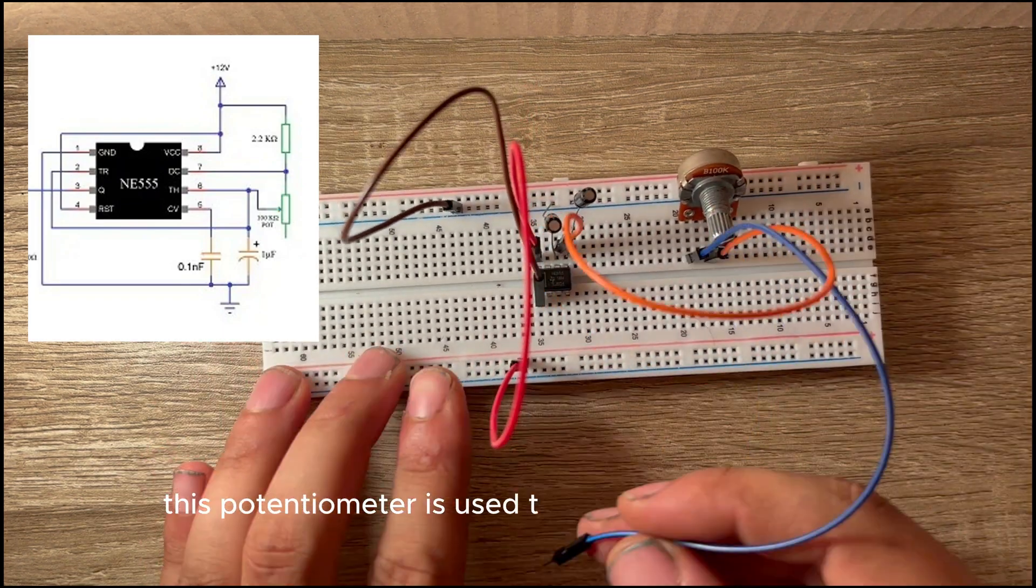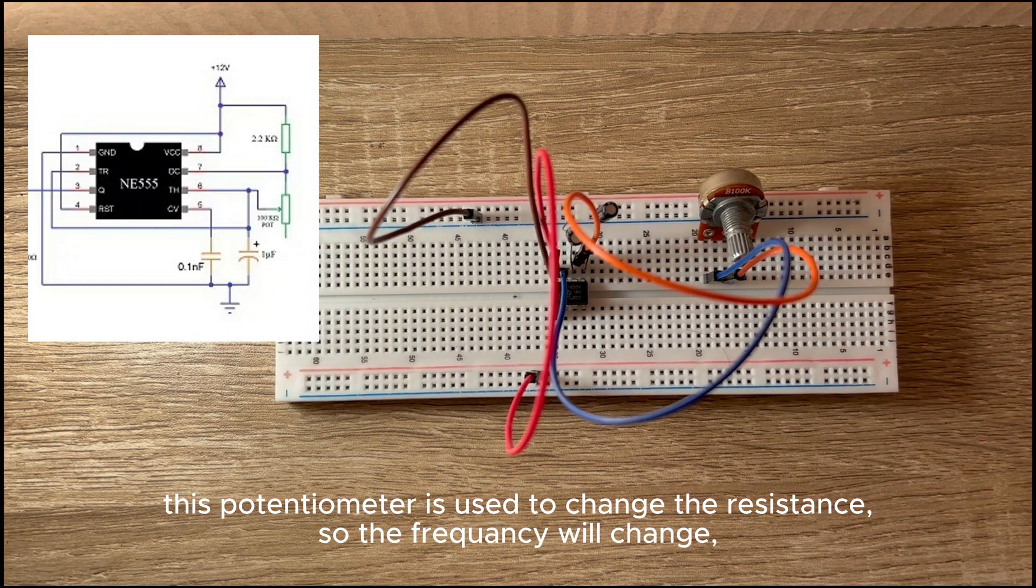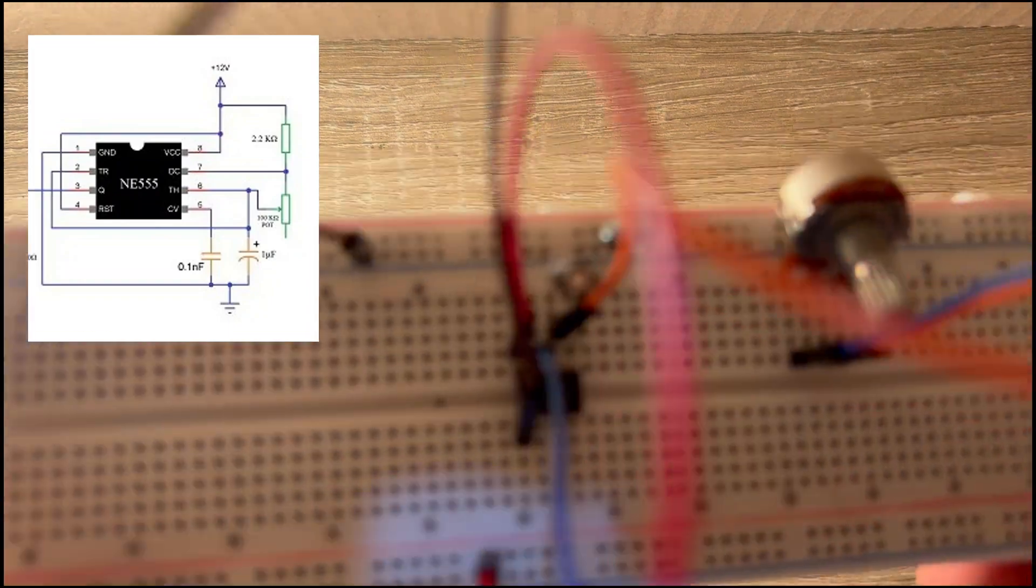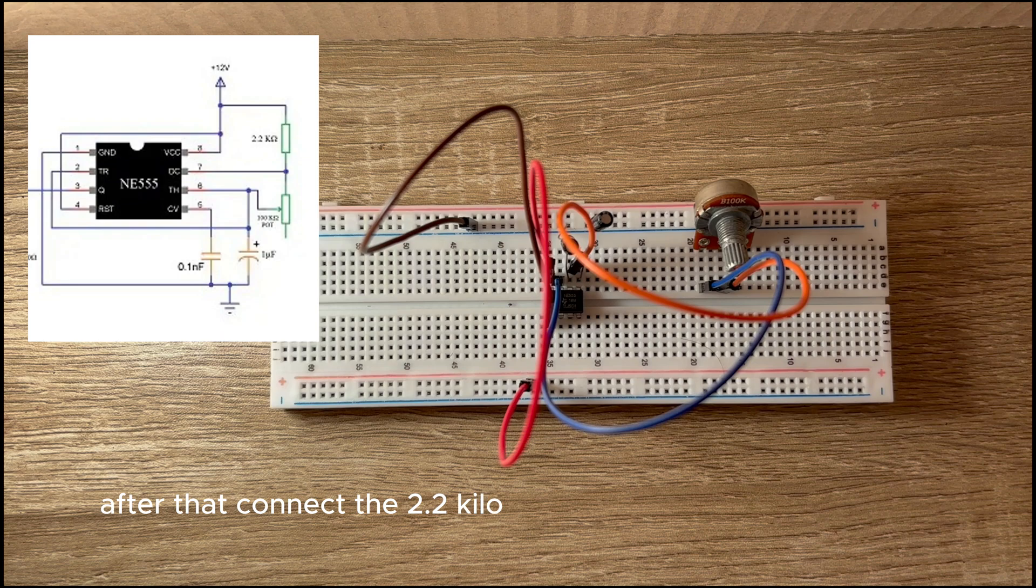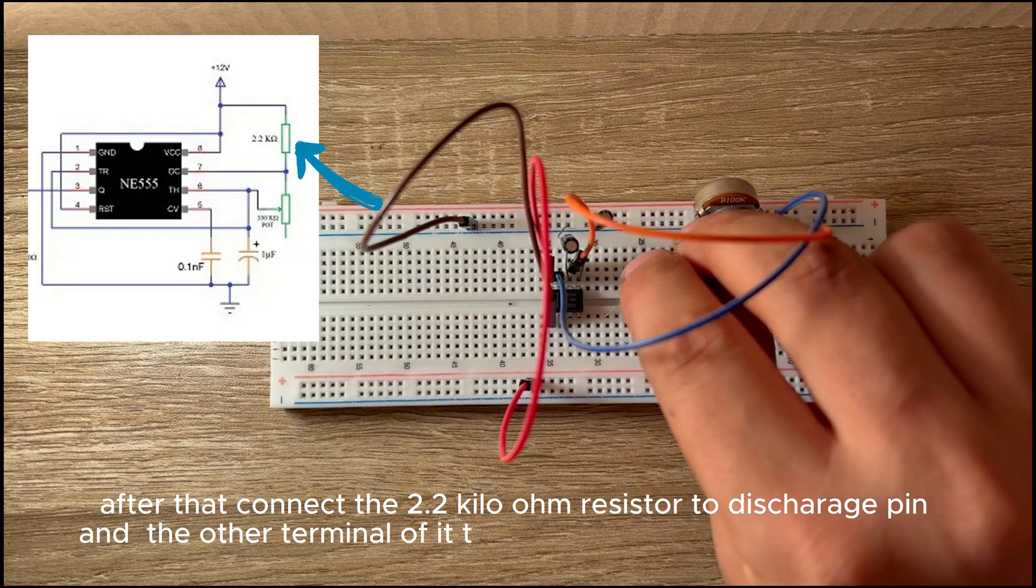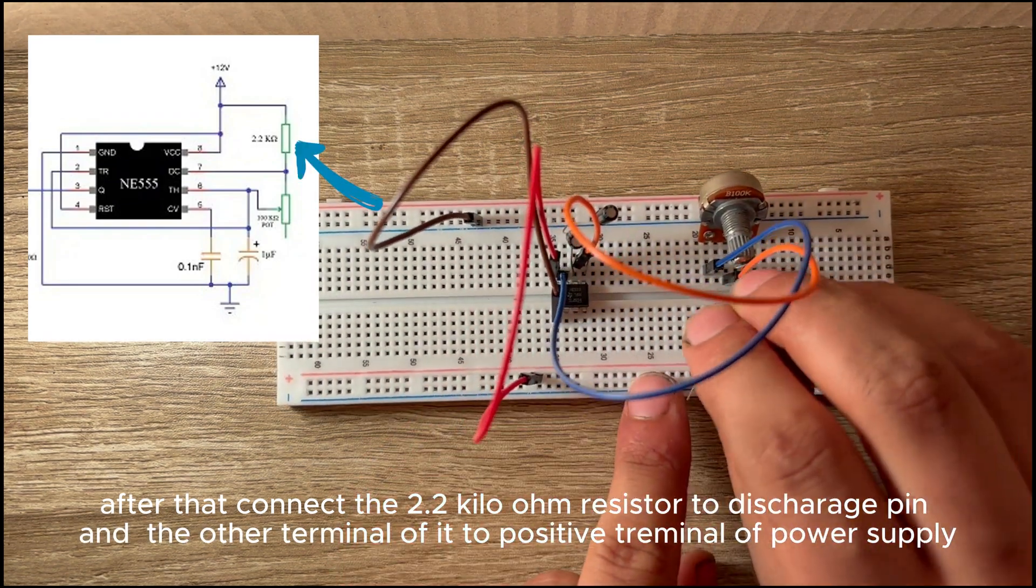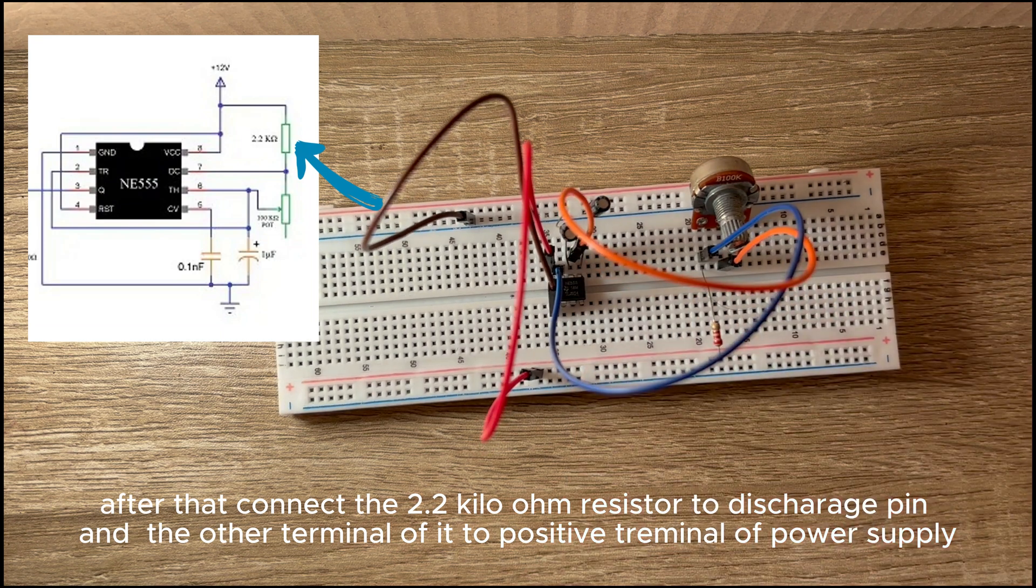Then connect the first pin of potentiometer to the discharge pin. This potentiometer is used to change the resistance, so the frequency will change. After that, connect the 2.2 kilo ohm resistor to discharge pin and the other terminal of it to positive terminal of power supply.